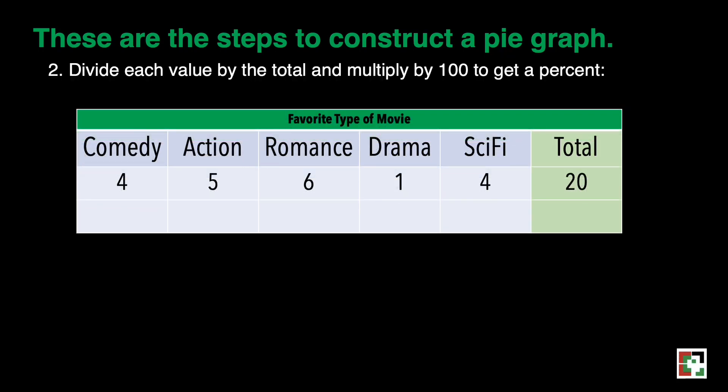After that, you will divide each value by the total and multiply by 100 to get a percentage. Just like this one: 4 over 20, 5 over 20, 6 over 20, 1 over 20, and 4 over 20.